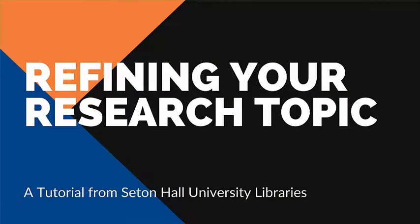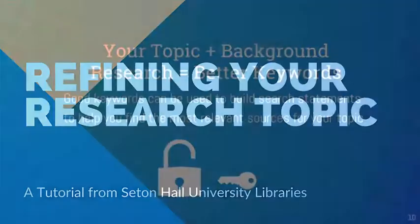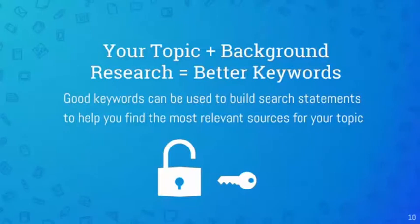How do you move from the research topic or question that you've selected to search results that are going to bring you relevant and useful sources for your assignment? At this point, you may only have a broad research topic selected. There's some important foundational work we can and should do in order to develop a list of important keywords and therefore the search statements that will be put into the library catalog and databases in order to get those relevant and useful sources.